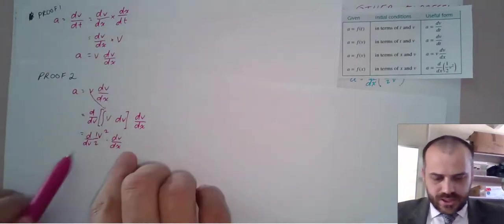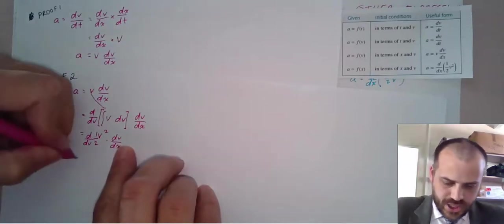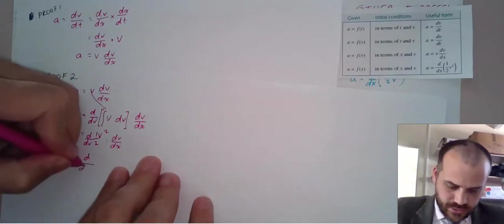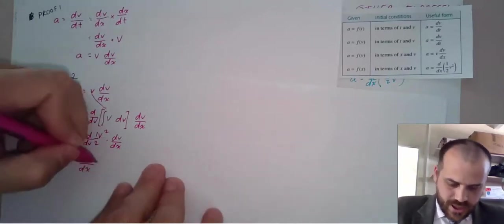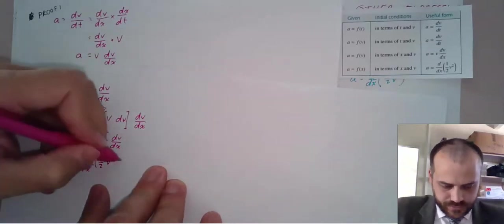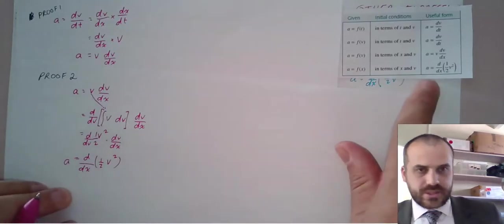What else do we see? We see DV, DV here. Our chain rule again, we get D, we've still got this DX here, with respect to X, half V squared. And that is our proof for our second little formula. That's it.